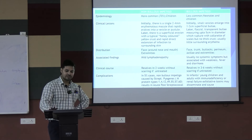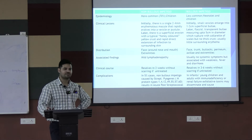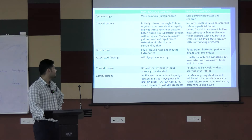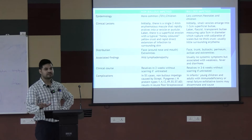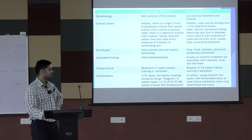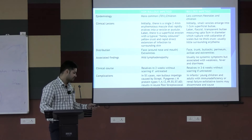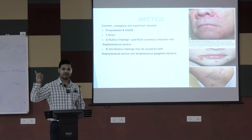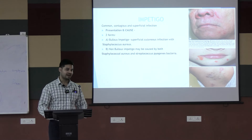Non-bullous impetigo occurs mostly in children, while bullous impetigo occurs only in neonates — rarely in children, very rarely in adults. Bullous forms are usually seen in NICUs. In non-bullous, the most important term to know is honey-colored crust — this is very classical of impetigo. The honey-colored appearance comes from dried exudates and pus that have dried on top of the skin.